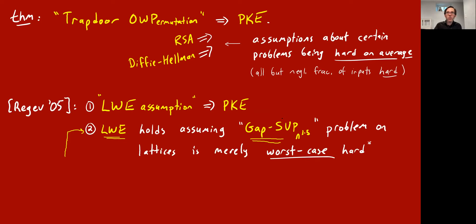It relates to things like multi-dimensional greatest common divisor algorithms, which is actually related to geometric lattices. Regev showed this cool result: if you assume this lattice problem is merely worst-case hard — there's no efficient algorithm that solves it in the worst case — then he deduced the average-case hardness of the LWE problem, that it's hard even for random inputs, and from that constructed public key encryption. These two things together were pretty great and made people much happier about the theoretical foundations for public key encryption.